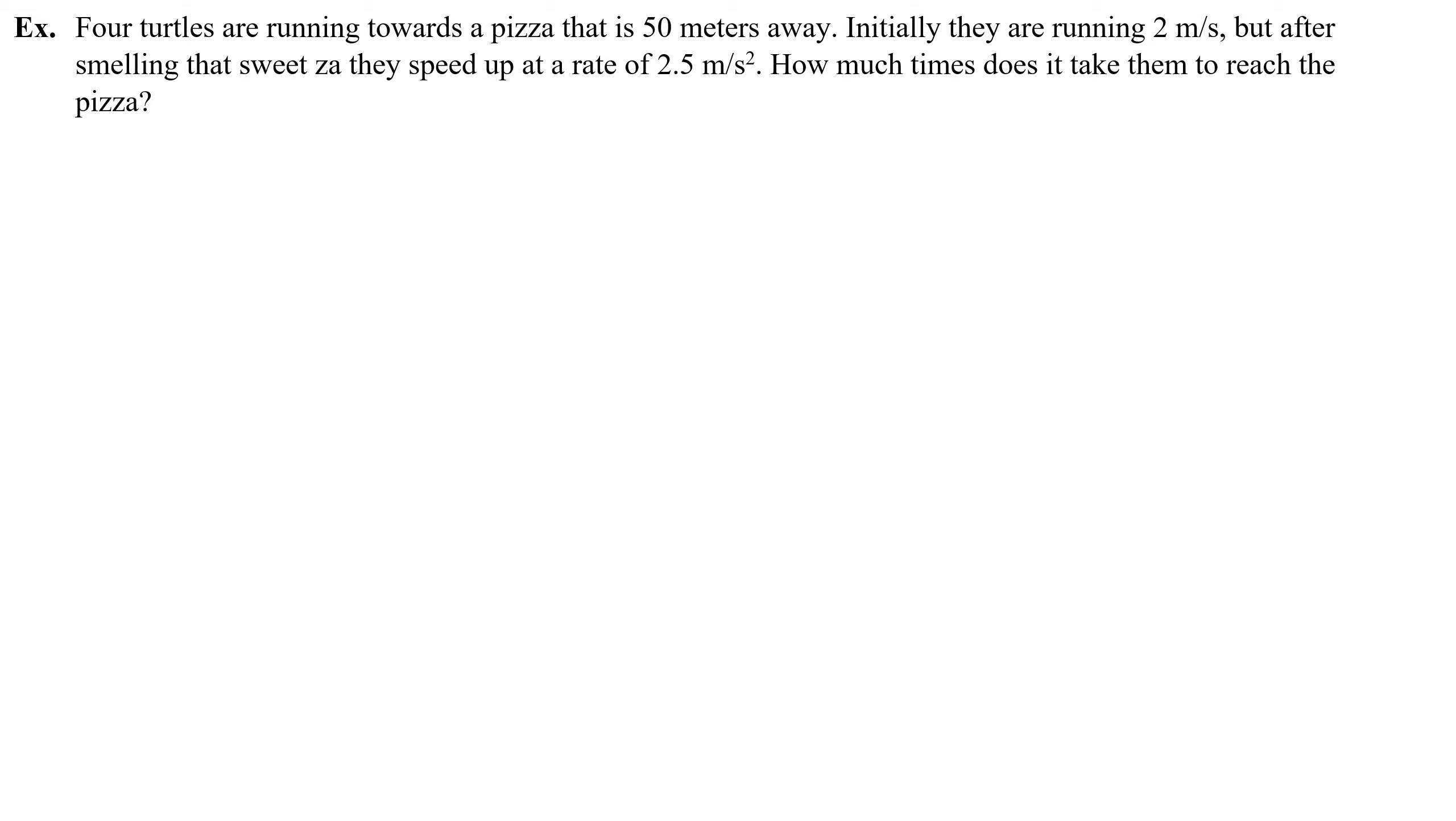I'm going to start by writing down any information that's given to me, and I know right away that the initial velocity is 2, and the acceleration is 2.5. I would make them both positive since it says the object is speeding up, and in order to speed up the velocity and acceleration have to be in the same direction. Then it asks me to find time, and it tells me the pizza is 50 meters away, which in my mind I would say 50 is the final position they reach, and the initial position is 0.